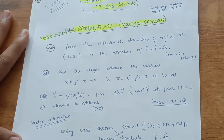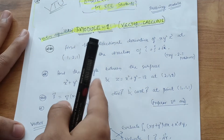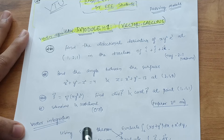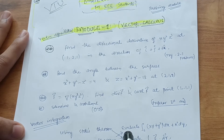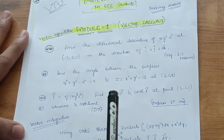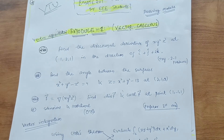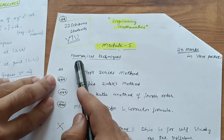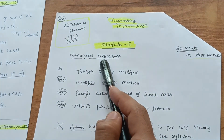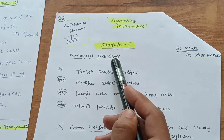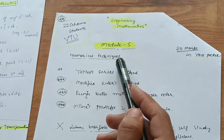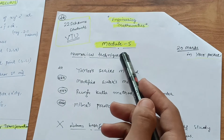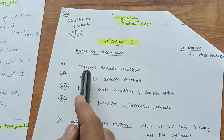Focus on Vector Differentiation completely — don't leave anything from that part. There is no mixing of questions from Vector Integration into Vector Differentiation. Next is Module 5 — Numerical Techniques — which is also a simpler module for EEE Mathematics overall.